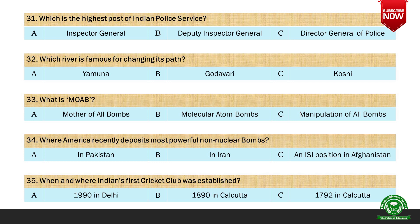Next question: Which river is famous for changing its path? Options are A. Yamuna, B. Godavari, and C. Koshi. And the right option is C. Koshi.